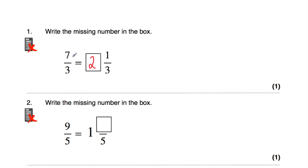Another way to think about it is: remember the line means divided by, so we're saying what's 7 divided by 3? That would be 2 remainder 1, so we'd have 2 and one third. The missing number is 2.